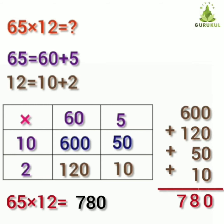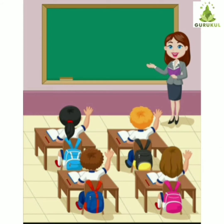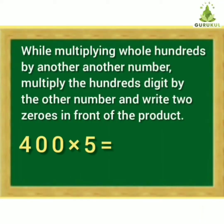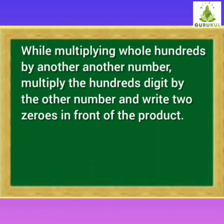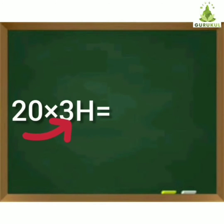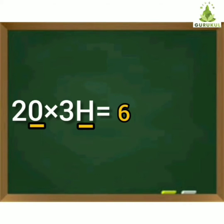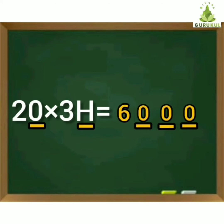Now let's understand how to multiply whole hundreds by a one-digit number. Remember, while multiplying whole hundreds by another number, multiply the hundreds digit by the other number and write two zeros in front of the product. For example: 20 multiplied by 300. First, multiply the hundreds digit 2 by 3. 2 threes are 6. How many zeros are left? Teacher, 3 zeros are left. So put 3 zeros in front of 6. Answer of 20 multiplied by 300 is 6,000.